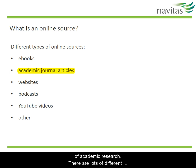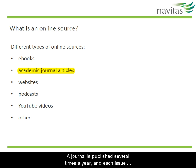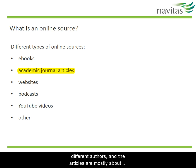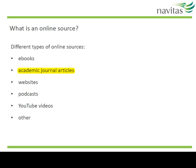A journal is like a magazine of academic research. There are lots of different journals on lots of different academic topics. A journal is published several times a year and each issue contains a number of articles. Each article is written by different authors and the articles are mostly about research that the authors have done recently.